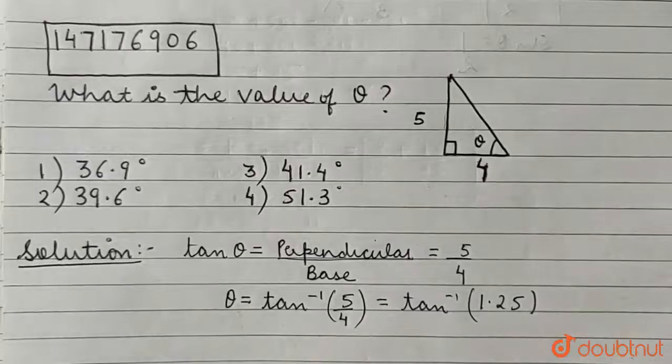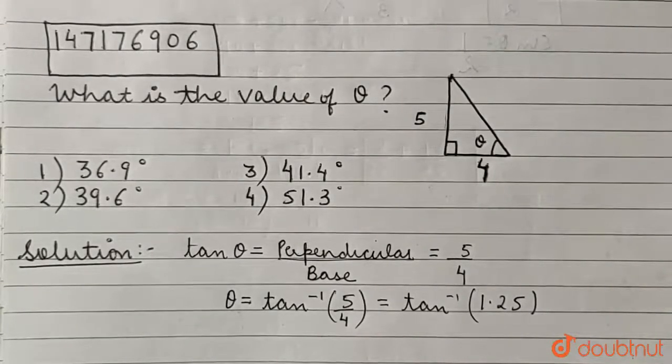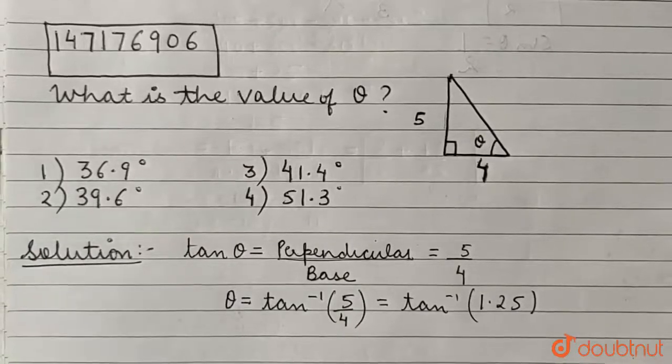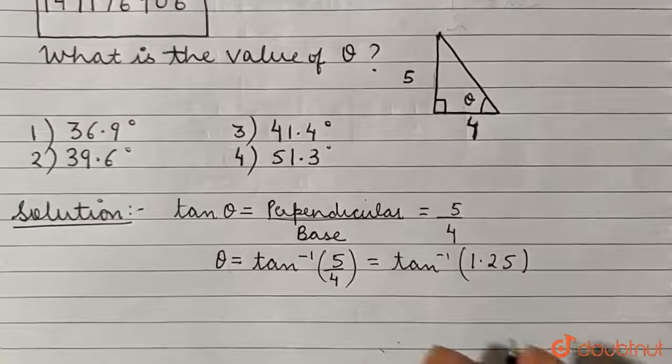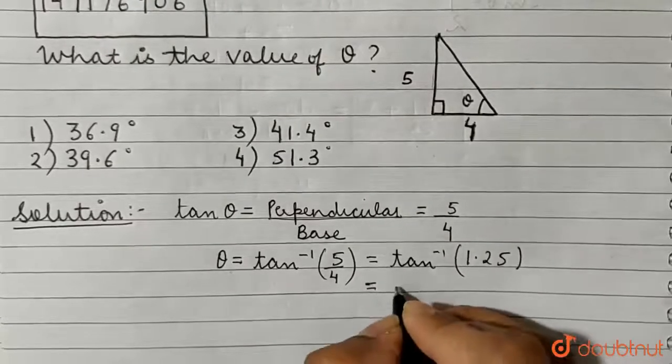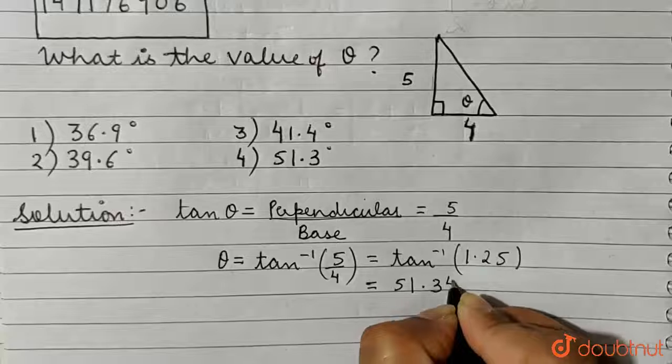Now, this is not something that can be calculated by us. So using a calculator, we can calculate this value, and upon using the calculator, we obtain that tan inverse of 1.25 is roughly equal to 51.34019.